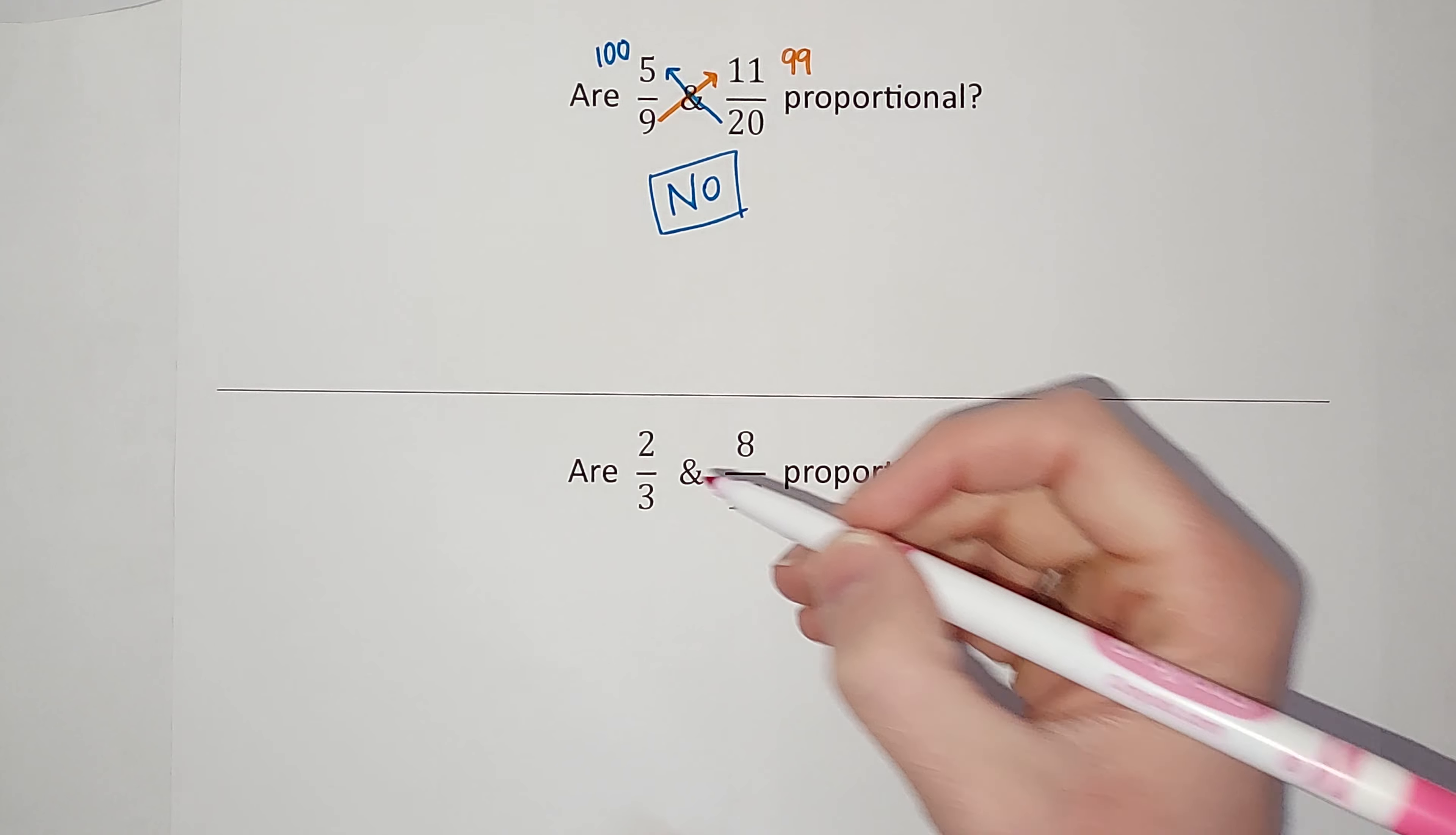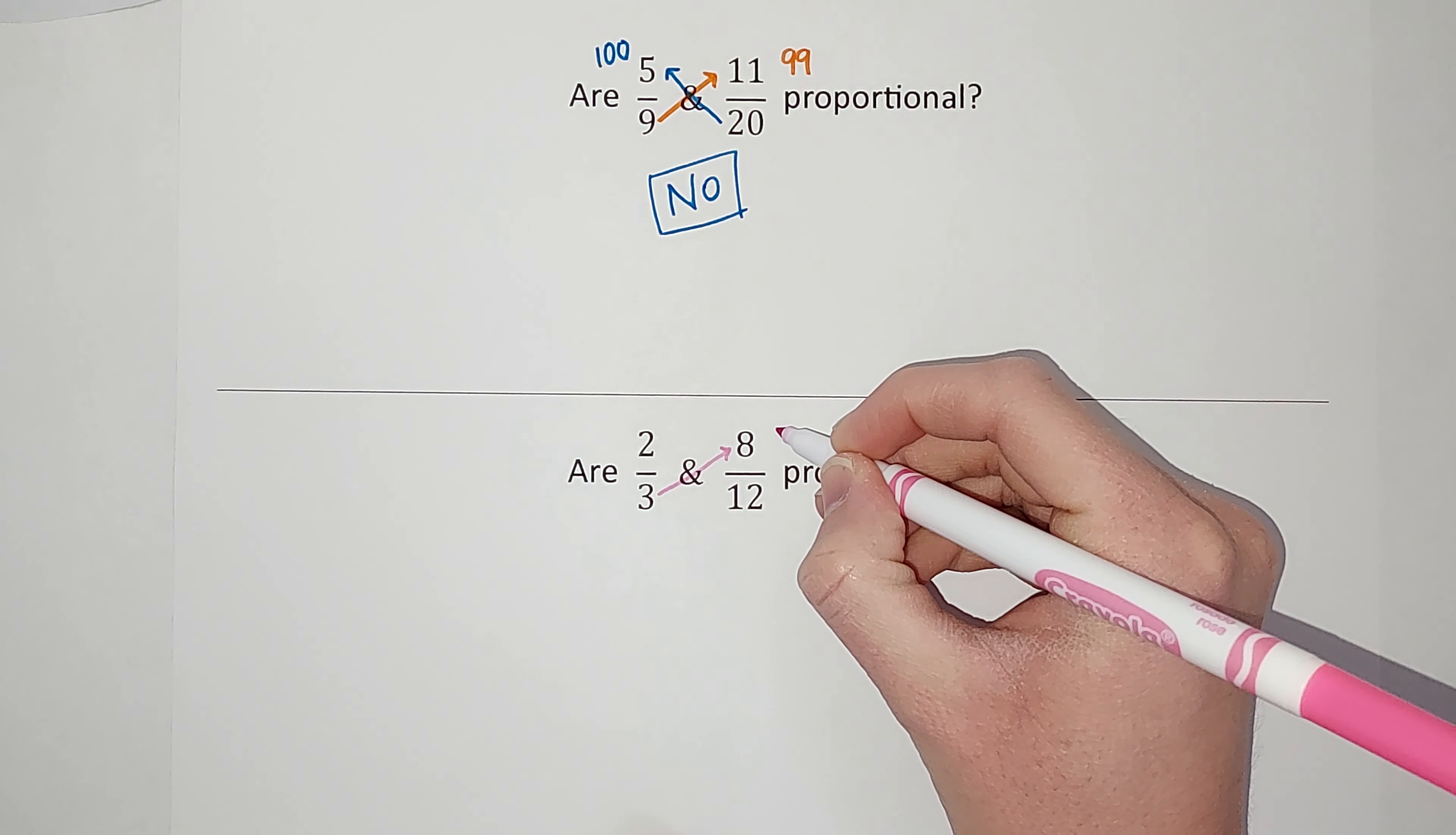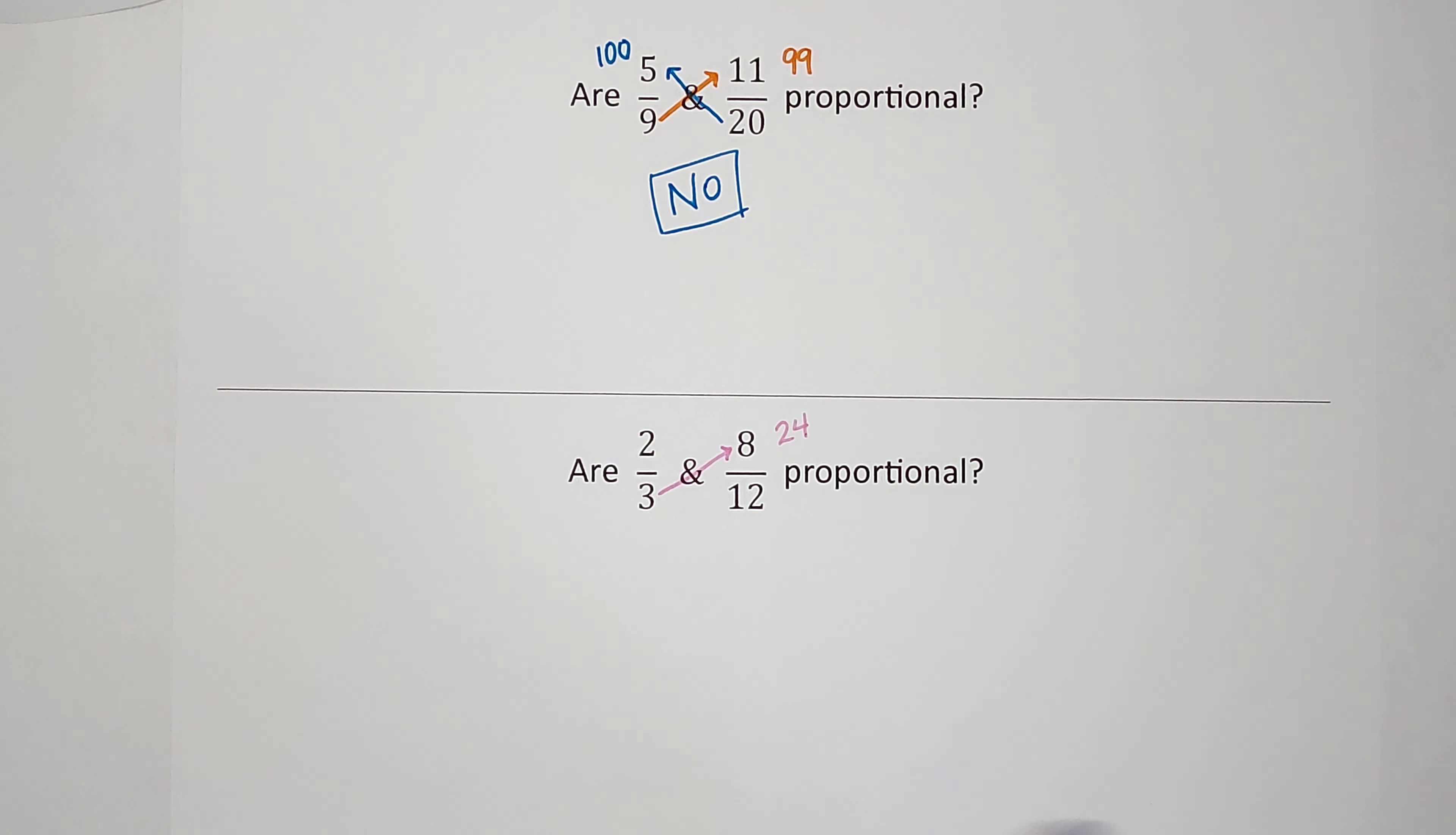We're gonna see if 2/3 and 8/12 are proportional. So 3 times 8 gives me 24. That is probably the times table I have the hardest time with. I don't know why, but there you go.